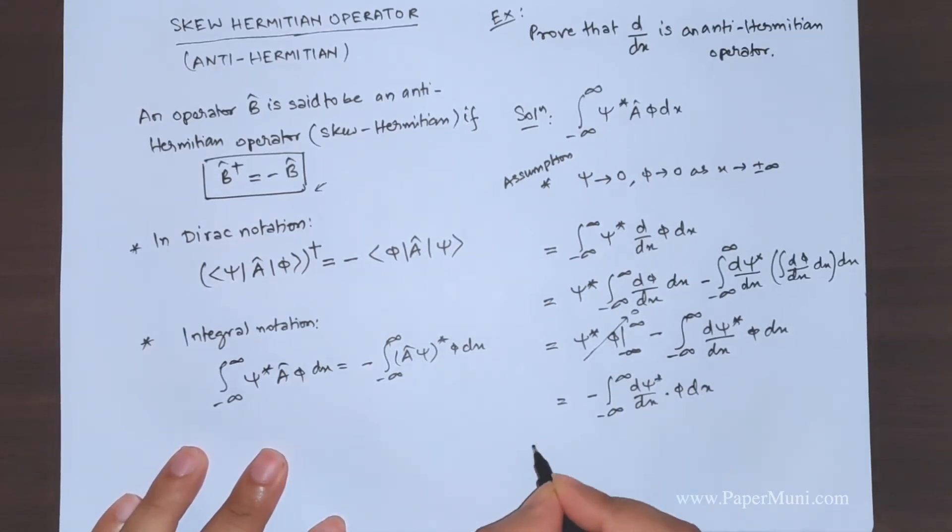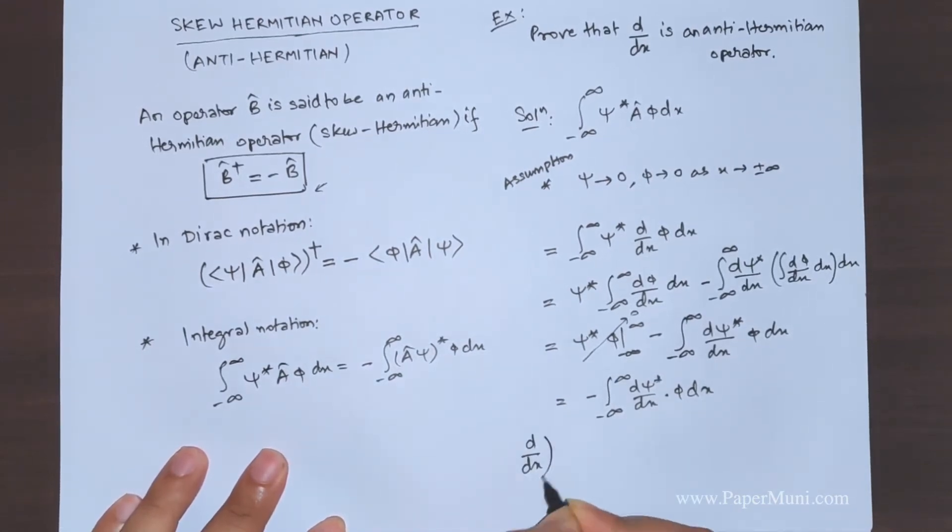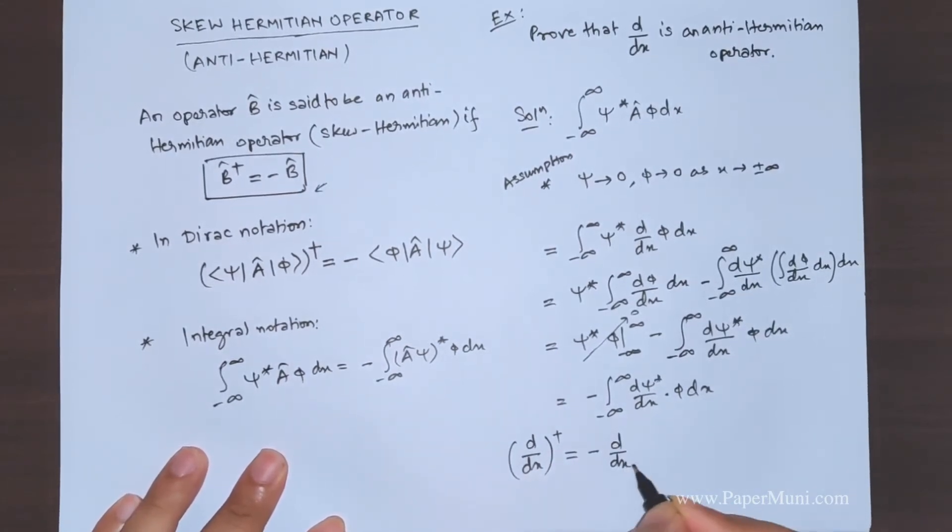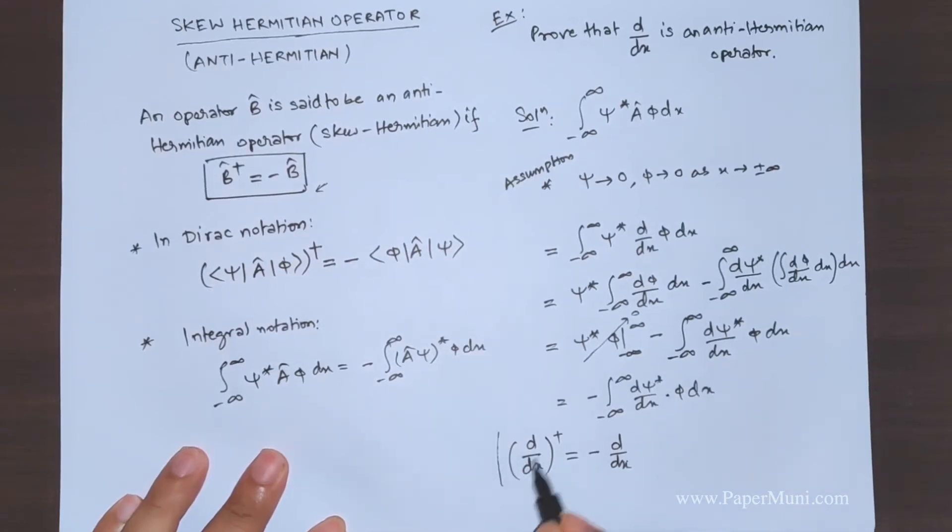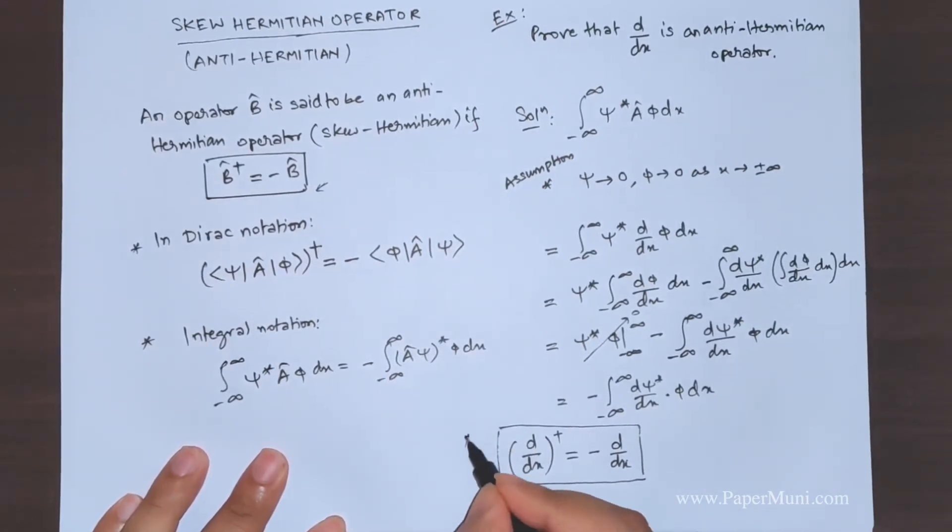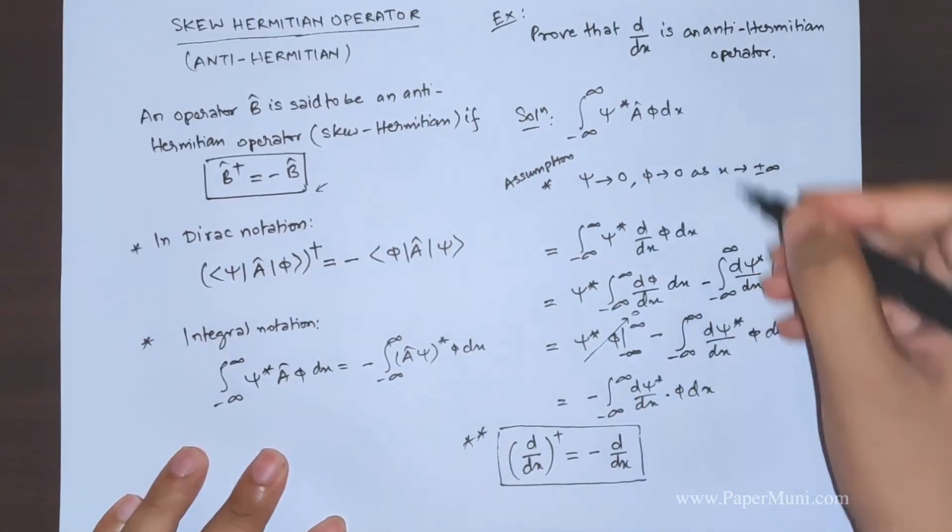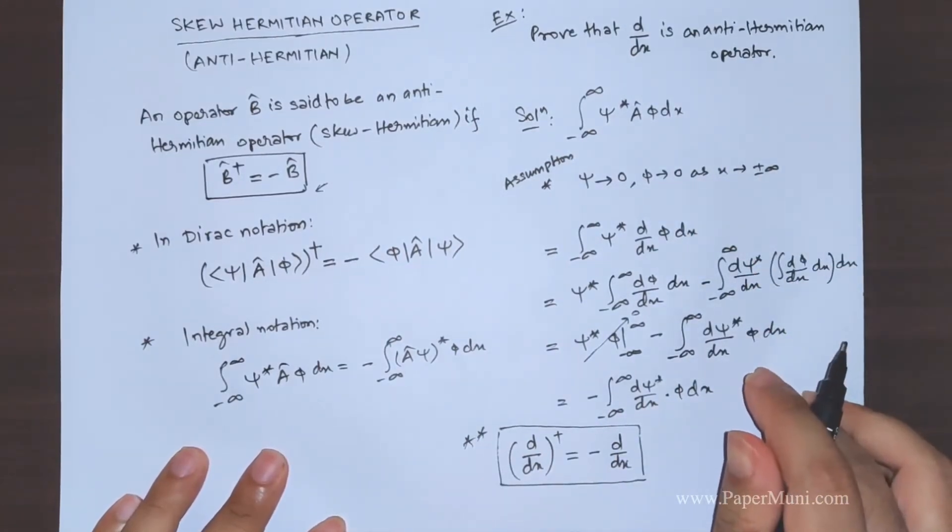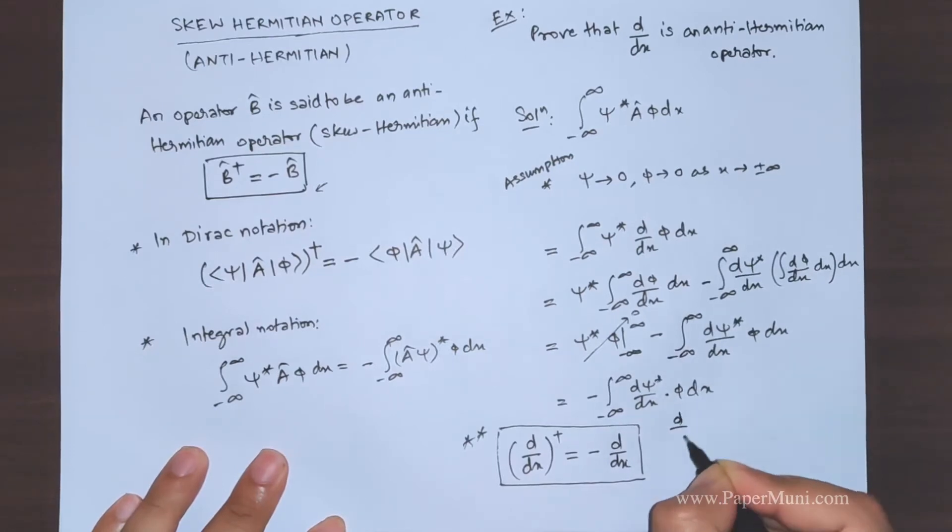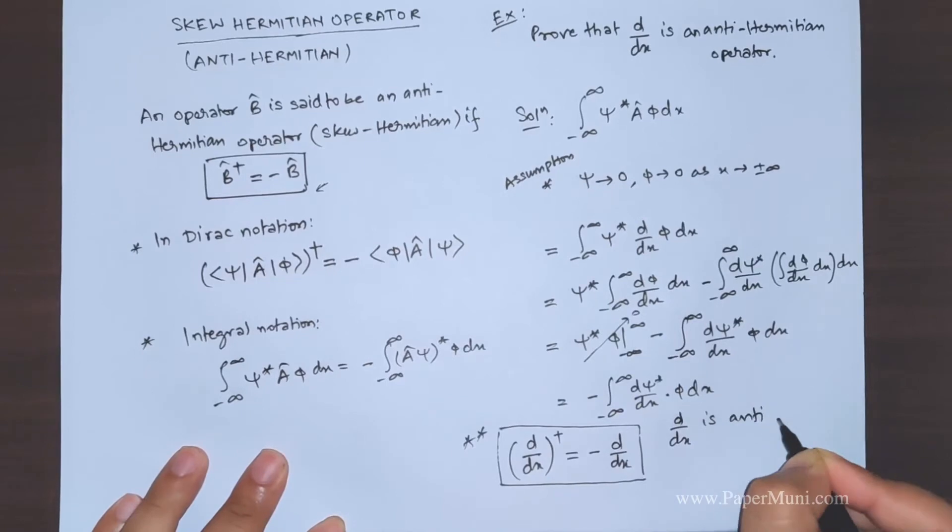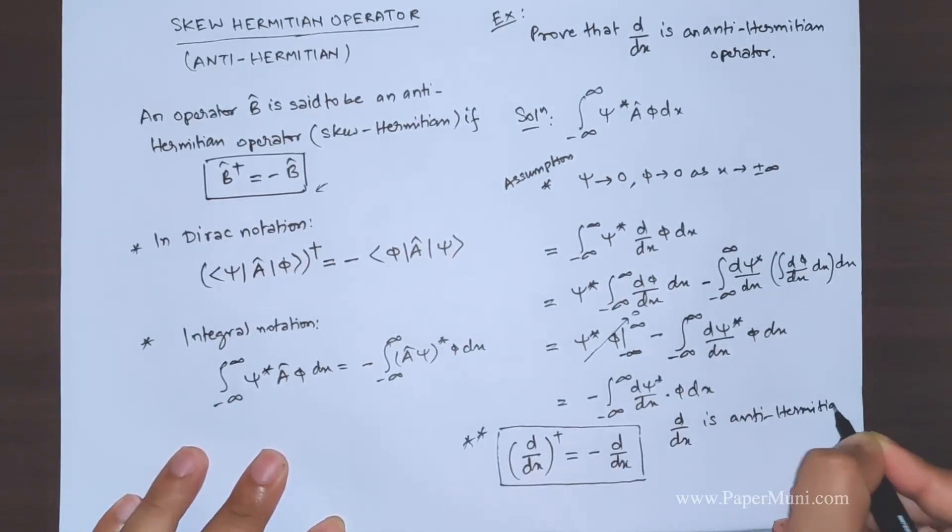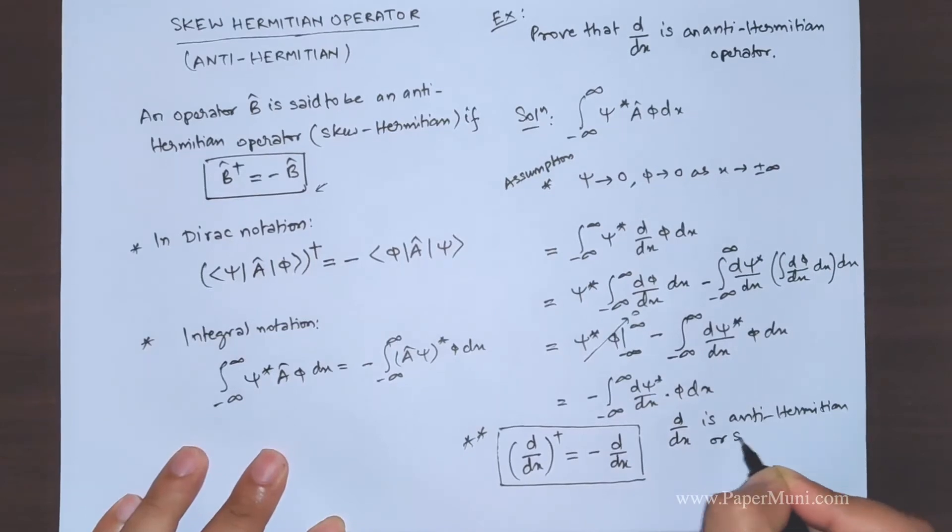That means that if you take a dagger of this operator, you get minus of d/dx. So you should remember this result, this is a very important result, you will be using it directly without having to go through the proof every time. So we say that d by dx is antihermitian operator, antihermitian or skew hermitian operator.